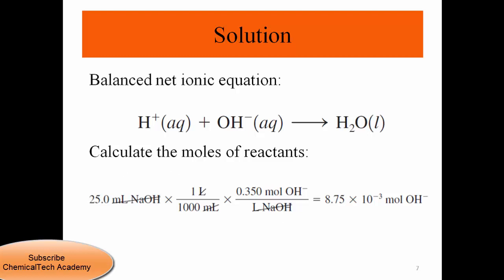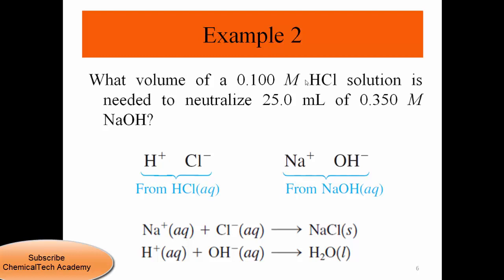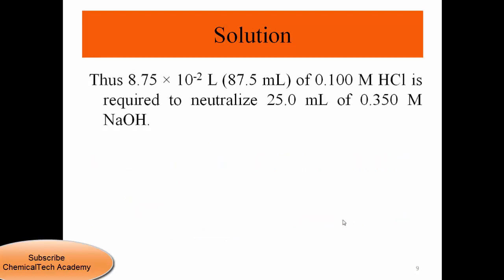The number of moles of OH⁻ is 8.75 × 10⁻³ moles. Since H⁺ and OH⁻ react in a 1:1 ratio, we need the same number of moles of H⁺. Dividing 8.75 × 10⁻³ moles by the concentration 0.1 mol/L gives 8.75 × 10⁻² liters, or 87.5 mL of 0.1 molar HCl required to neutralize 25 mL of 0.35 molar sodium hydroxide.